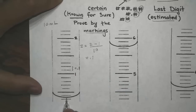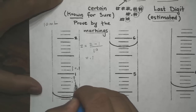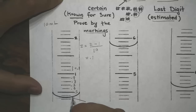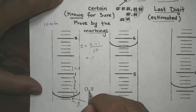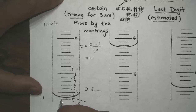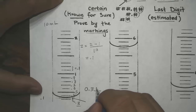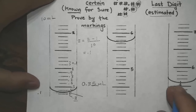Our measurement is at the meniscus level. Counting down from 1: 0.9, 0.8, 0.7, 0.6, 0.5, 0.4, 0.3. We know for sure this is less than 1, and the certain digits tell us it is 0.3 point something. The estimated digit is between 0.3 and 0.4 — about half of 0.1, which is 0.05. The unit is milliliter.